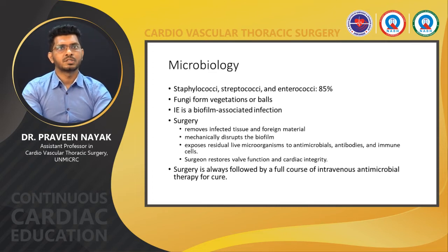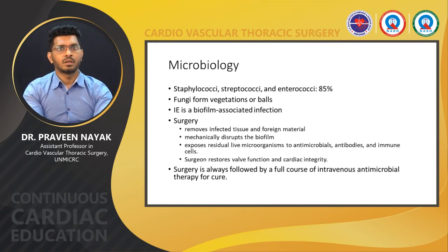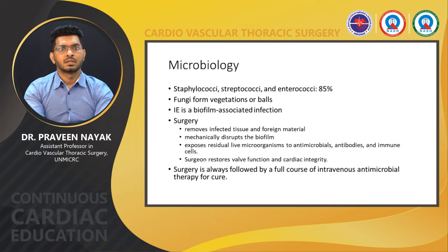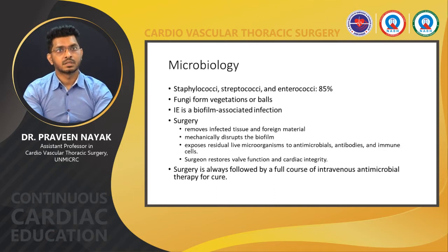Briefly about the microbiology of infective endocarditis — it varies depending on whether the valve is native or prosthetic and whether the infection is community-acquired or healthcare-associated. Organisms like staphylococci, streptococci, and enterococci are responsible for approximately 85% of all infections. Fungi form vegetations or balls but are usually less invasive, although they can lead to mycotic aneurysms and easily become disseminated. The hypothesis that infective endocarditis is a biofilm-associated infection is important: biofilm is a thin membrane-like structure produced by organisms that acts as a protective layer where antimicrobial or immune-mediated cells cannot reach. This explains why infective endocarditis-related infections are difficult to treat, why recurrences occur even after seemingly successful medical treatment, and why surgery is often required.